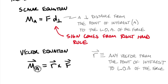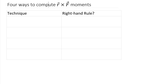Those are the general equations for a moment. If we combine these with our knowledge of cross products, it turns out there are fundamentally four different ways to solve a cross product. We'll talk about these four different ways, which of them require a manual right-hand rule versus a built-in one, and the preferred methods for two-dimensional versus three-dimensional vectors.